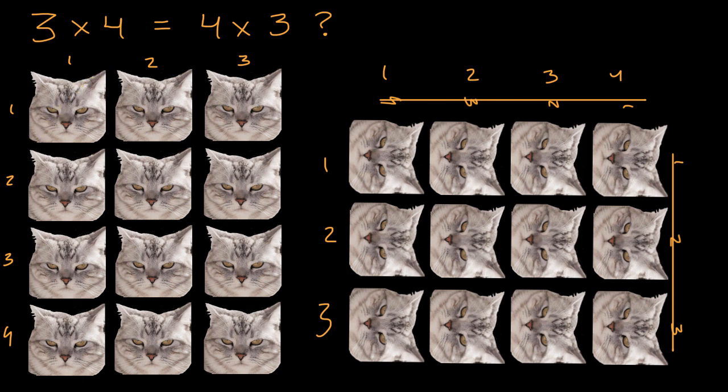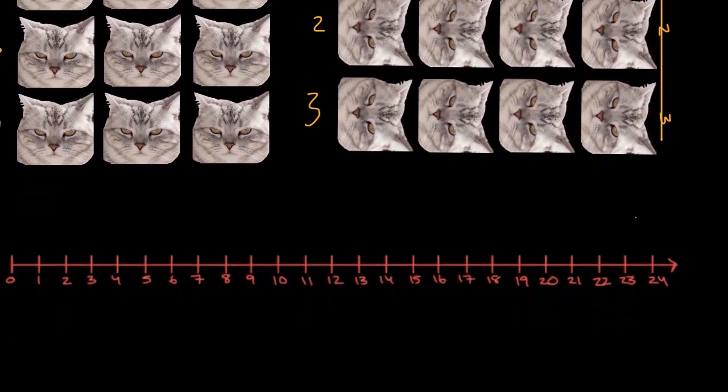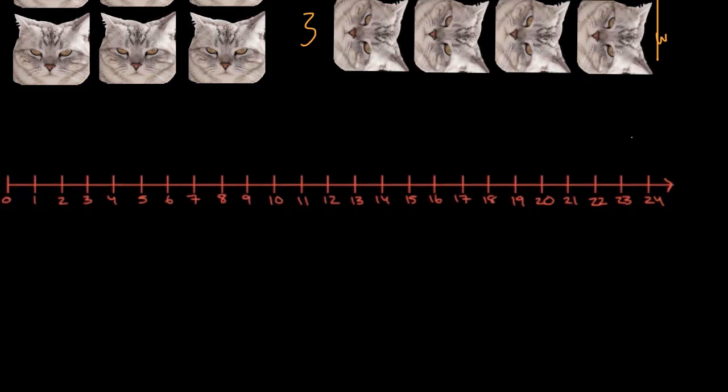And we could also see that on a number line. And we could do that with multiple examples. I'll keep a couple of angry cats here looking at us just to keep us in check. If we want to think about three times four, we could view it as four threes. So three, six, nine, 12, or we could view it as three fours, four, eight, and 12.